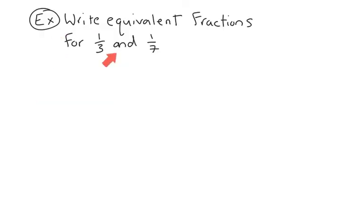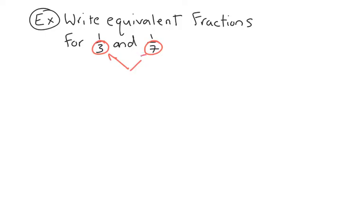We're going to do a sample question: we want to write equivalent fractions for 1 over 3 and 1 over 7. Before we do that we have to look at the denominators in these fractions — we have 3 and we have 7. We want to find the lowest common denominator here, so just like in our previous lesson we're going to find the lowest common multiple of 3 and 7.